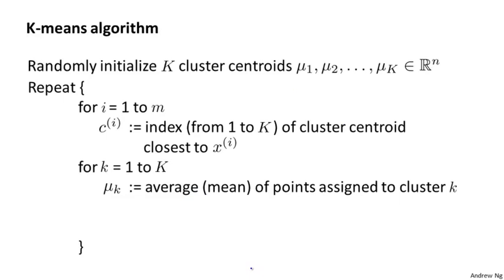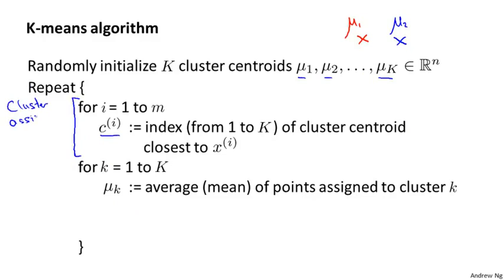Here's what the k-means algorithm does. The first step is to randomly initialize k cluster centroids, which we call mu_1, mu_2, up to mu_k. In the earlier diagram, the cluster centroids corresponded to the red cross and the blue cross — so maybe the red cross was mu_1 and the blue cross was mu_2. Then the inner loop repeatedly does the following: for each training example, we set the variable c_i to be the index from 1 to k of the cluster centroid closest to x_i. This is the cluster assignment step, where we assign each example to the nearest centroid.